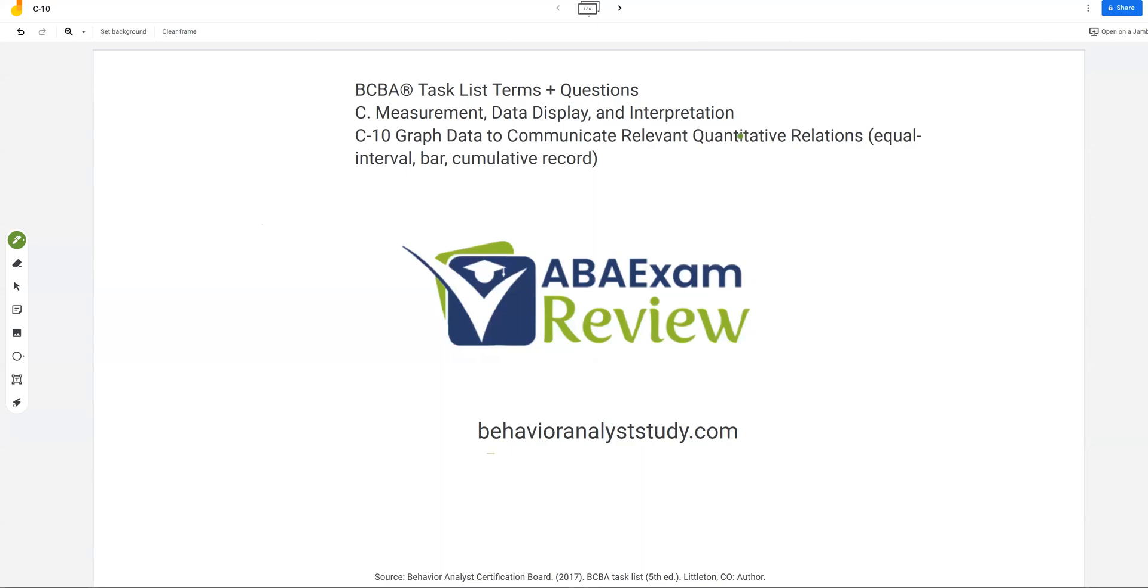All right, welcome back to ABA Exam Review and the continuation of our BCBA task list series. Today we're continuing with C-10, graph data to communicate relevant quantitative relations. All C-10 is really asking you to do is understand why we graph data and what type of graphs do we normally use. It's a very straightforward task list item.